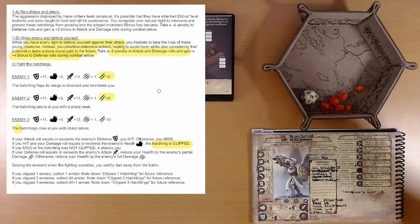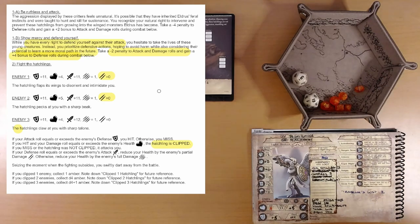And we're hoping for a low number, but no, we actually score a pretty good hit. If your attack roll exceeds the enemy's defense. If you're hitting your damage roll equals or exceeds, the hatchling is clipped.